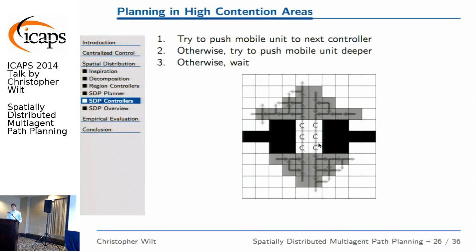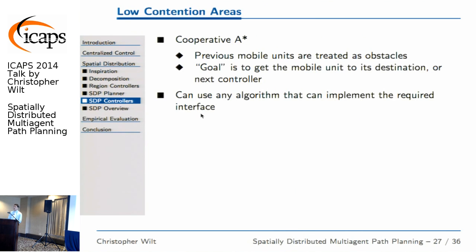There are three simple rules for the high contention controller. If you can get into the next region, do that. If you can't get into the next region, go deeper into the controller's buffer area. And if there's another mobile unit in front of you, just wait. In the low contention areas, we used cooperative A*, which isn't necessarily the latest and greatest algorithm, but within the confines of our wide open rooms it was a good choice.